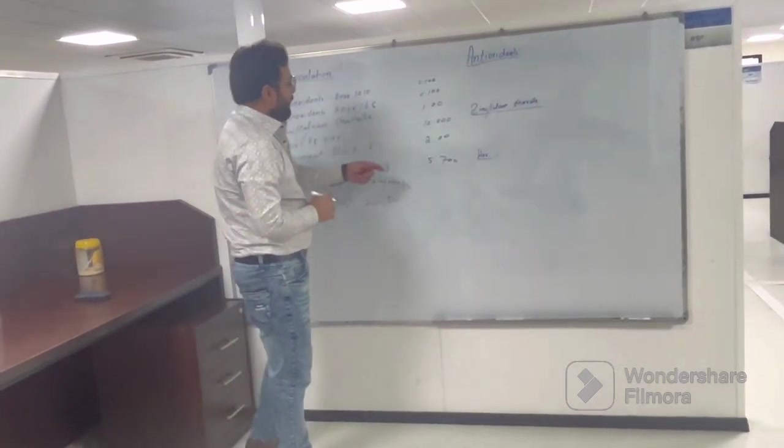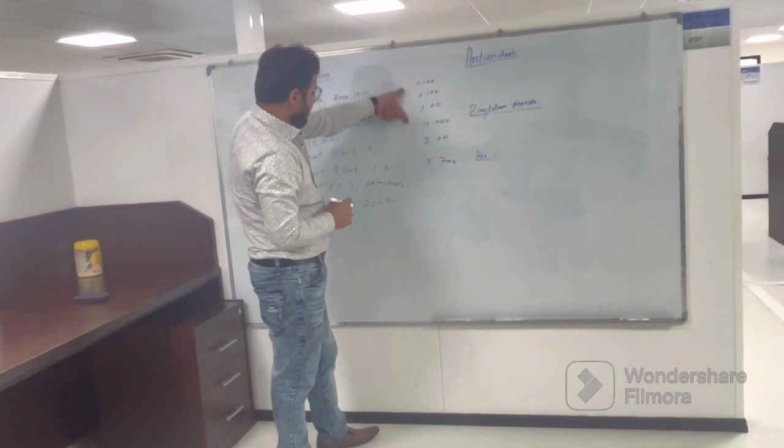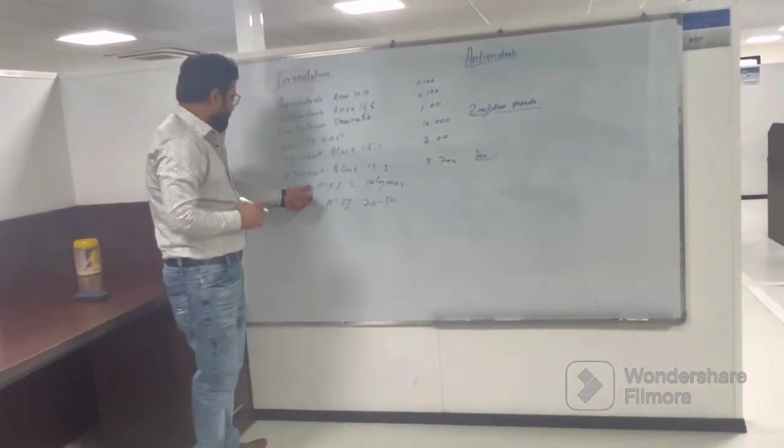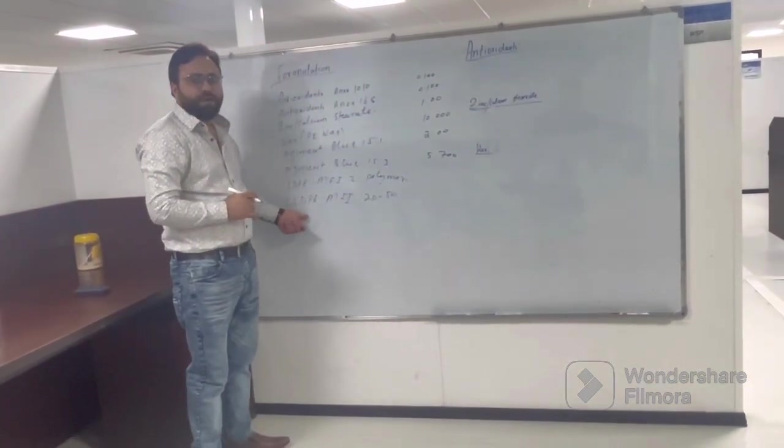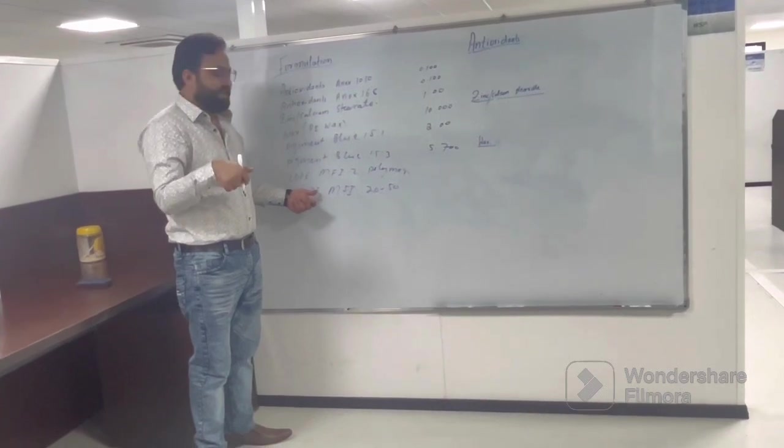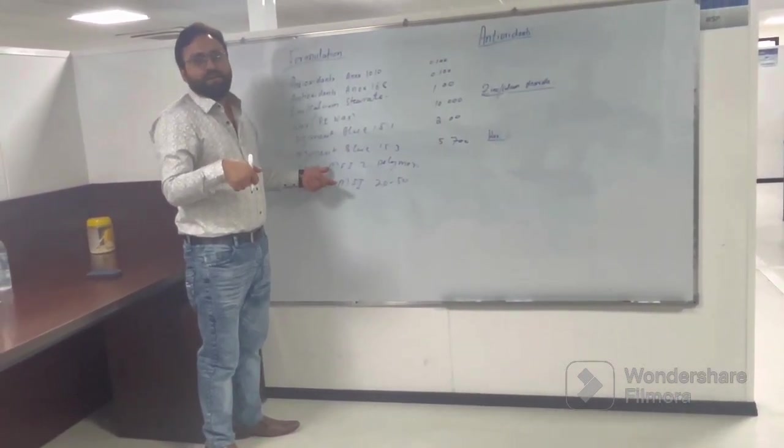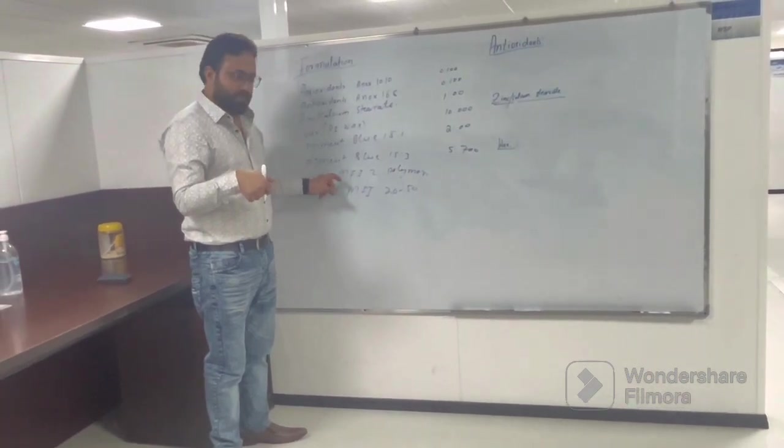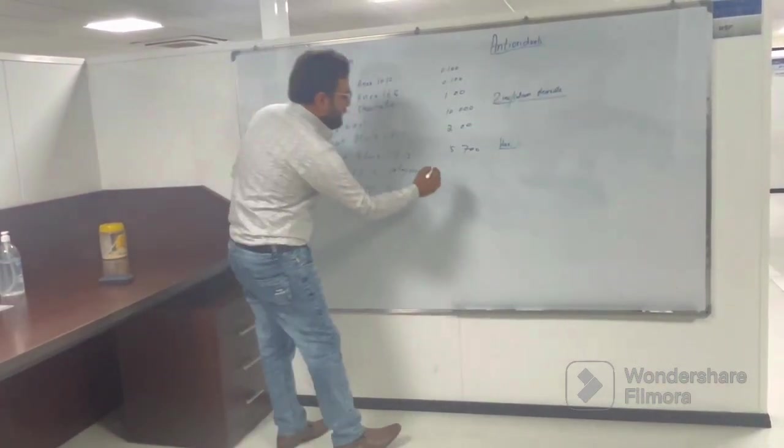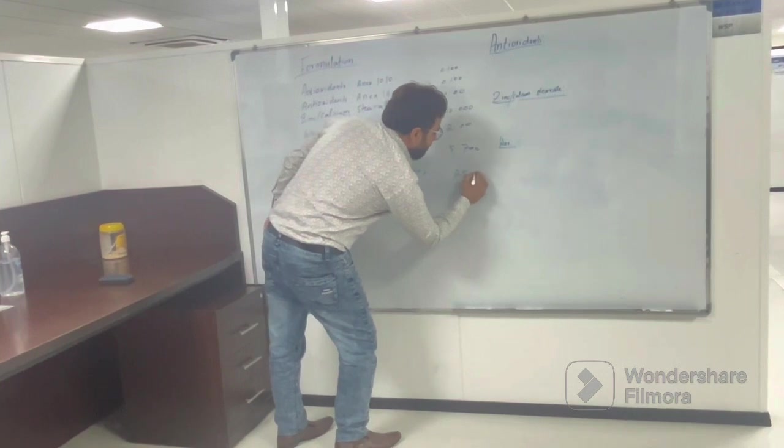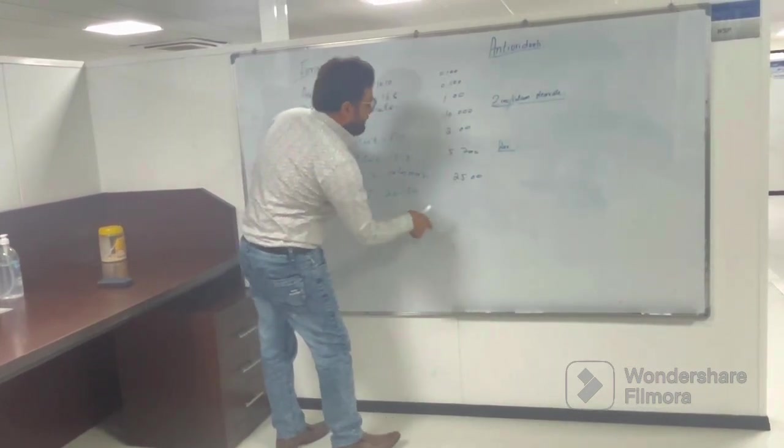Now you have to calculate this polymer combination. You have to check the customer specification, what the customer is asking, which MFI they are looking for. So you have to play. Let's say I am using here 25 and the rest I will use.